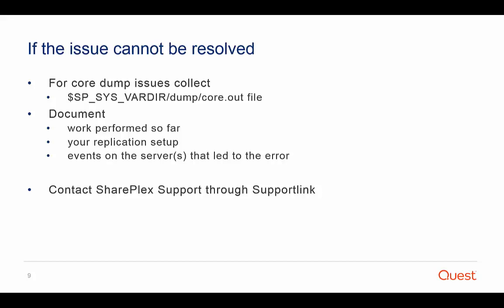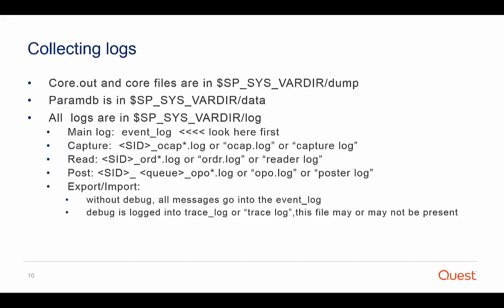Describe your replication setup: is it one-way, peer-to-peer, or high availability? Also indicate whether this is a test or production environment and explain the urgency of the issue. Describe the events on the server that led to the error. Once this is documented, log in to SharePlex support, open a ticket, include the information gathered, and attach the necessary logs.